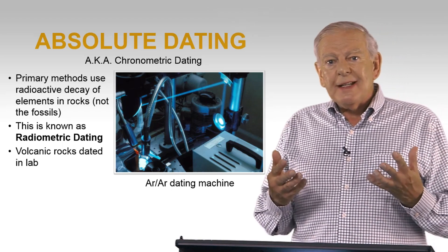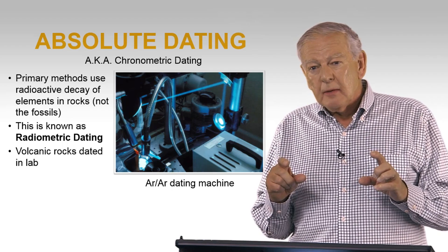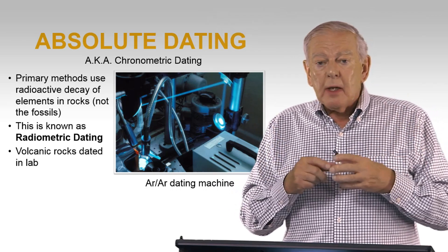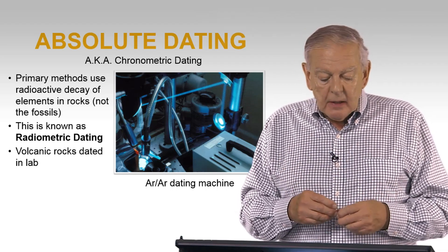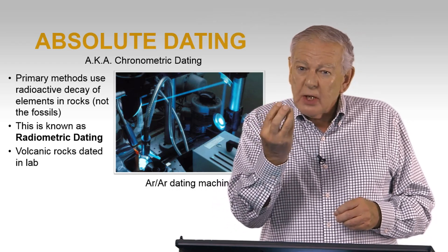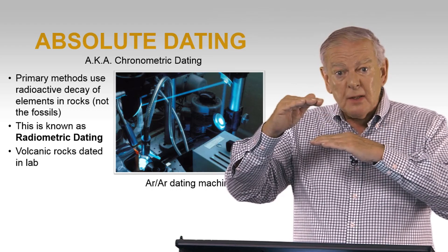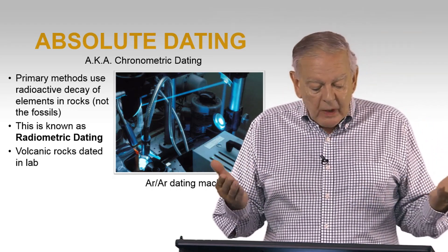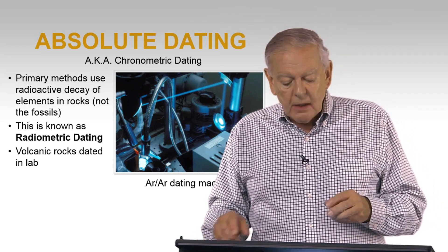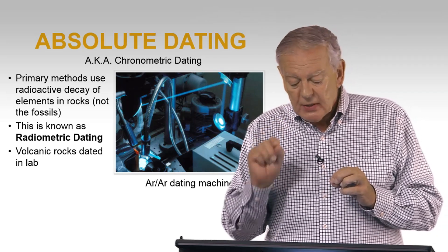We're interested in absolute dating, sometimes called chronometric dating — trying to determine the actual age of a layer in a geological column. The primary methods we use are based on the radioactive decay of certain elements in rocks. We can't date fossils themselves because they're totally changed into stone, so you have to date the context. This is known as radiometric dating, and it's basically based on volcanic rocks such as argon dating. Here you see a close-up of an argon-argon dating machine used to determine very precise ages.